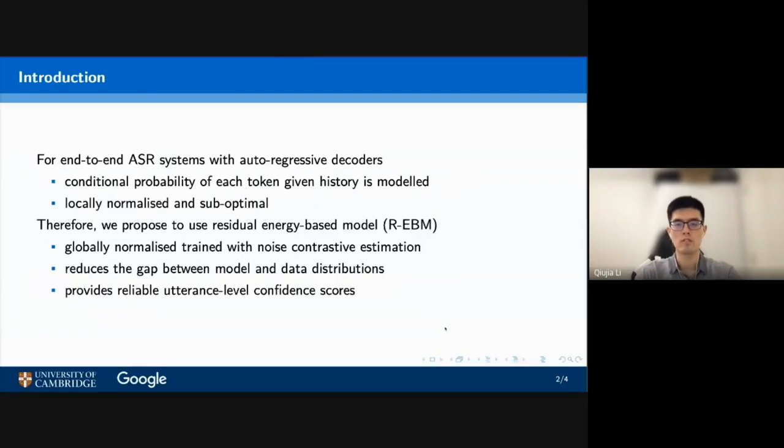For end-to-end ASR models with autoregressive decoders, such as neural transducers and attention-based encoder-decoder models, the conditional probability of each token given history is learned. Each probability is locally normalized and the system might be suboptimal for issues like exposure bias.